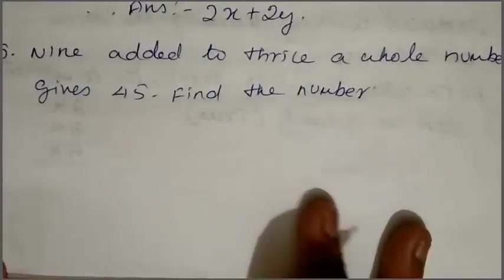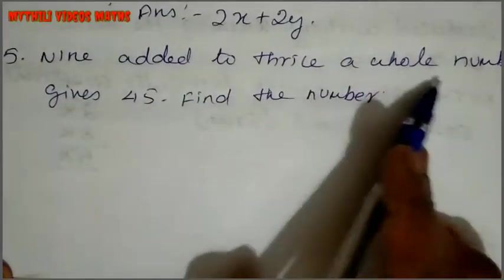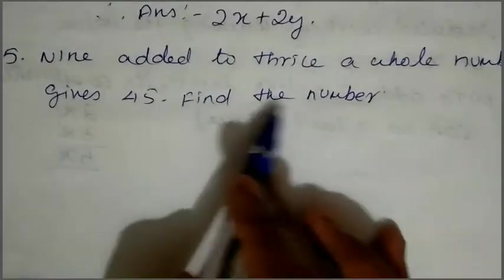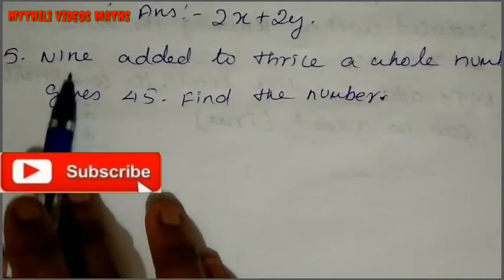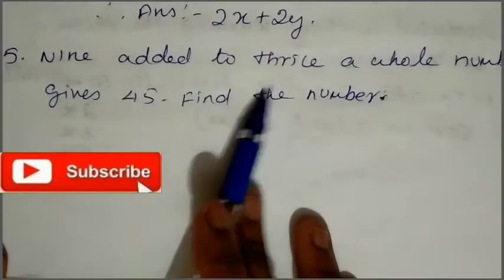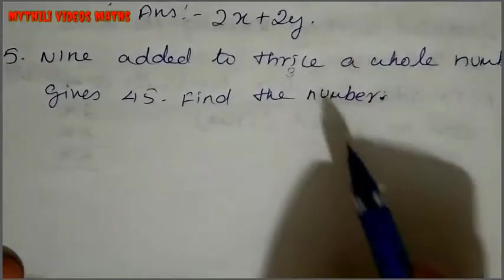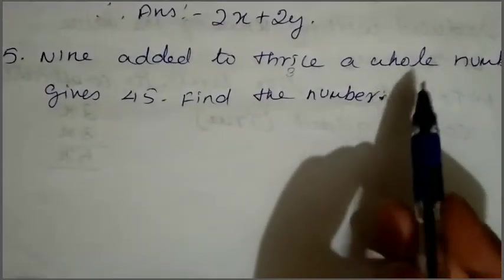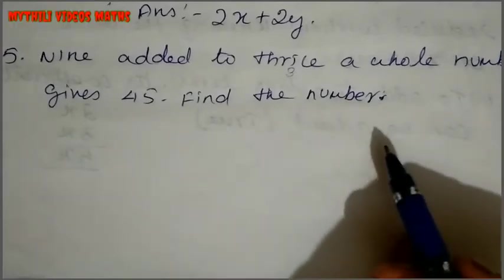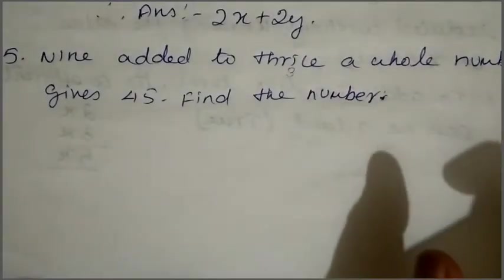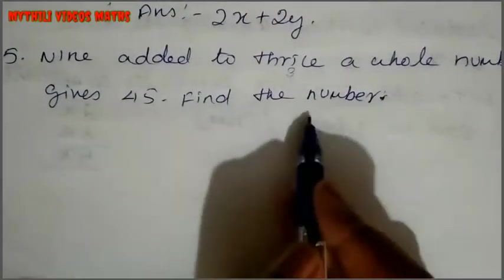We will see the next sum, the fifth sum. Nine added to thrice a whole number gives 45. Find the number. Thrice means three times. Whole numbers start from 0, 1, 2, 3, etc. Given: 9 added gives 45.